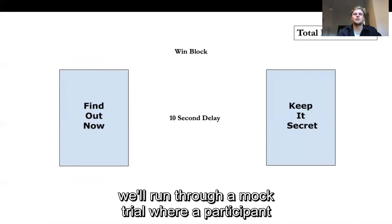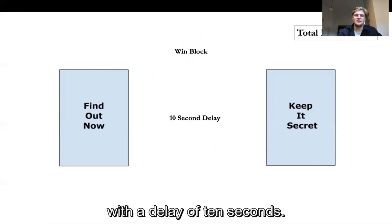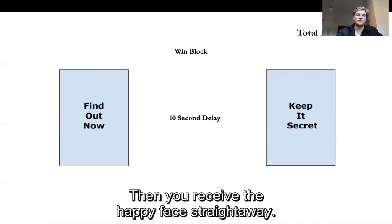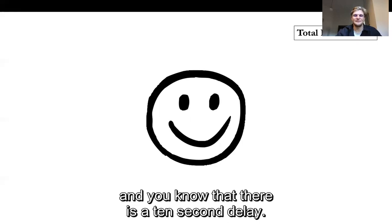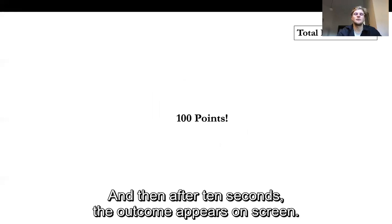To make this a little clearer we'll run through a mock trial where a participant chooses find out now in the win block with a delay of ten seconds. So imagine here you're choosing between find out now and keep it secret and you choose the find out now button. Then you receive a happy face straight away. What this means is in ten seconds time you're going to receive a hundred points as we're in the win block and you know that there is a ten second delay. Then after ten seconds the outcome appears on the screen and you've won a hundred points.